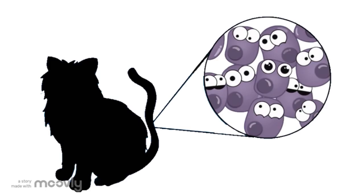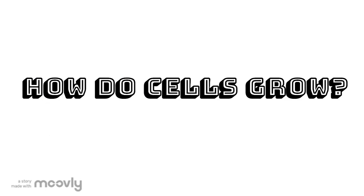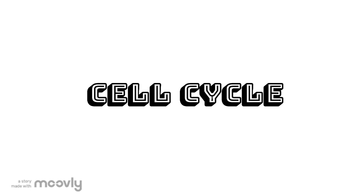How do cells live? Every living organism is made out of cells, but how do cells grow? They go through a cycle called the cell cycle.